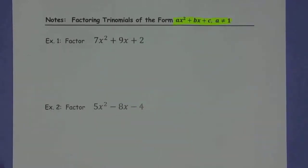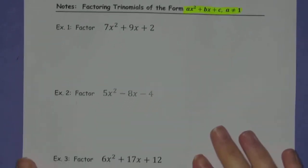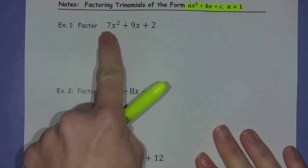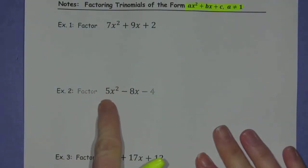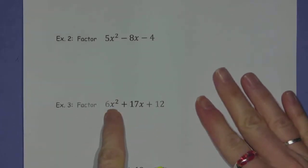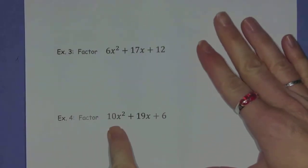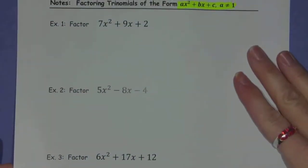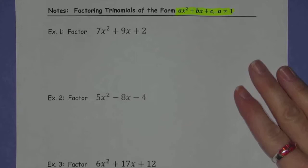So today if you take a look at the examples we're going to be factoring, we have a 7x squared, so it's no longer going to be a 1x squared. Here we have a 5x squared, a 6x squared, and a 10x squared. So none of the A's, the constants in front of the x squared term, none of them are 1.